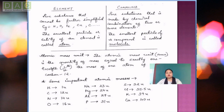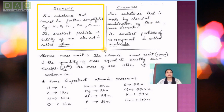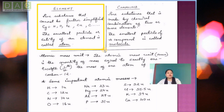Next, we will discuss elements and compounds before entering the main concept of atoms and molecules. An element is a pure substance that cannot be further simplified. Examples include hydrogen, oxygen, iron, copper, carbon, and many others. In any element, such as hydrogen, all the different atoms have similar mass and chemical properties like the element. The smallest particle or entity of an element is called an atom.